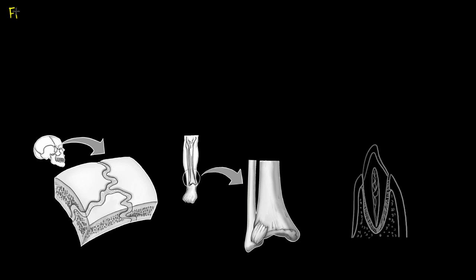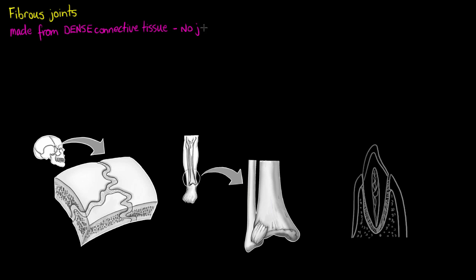Welcome to this tutorial on fibrous joints. Over the last few videos we have discussed joints and taken a deeper look into synovial joints, but what about our fibrous joints? Fibrous joints within the body are classified by a joint that is created by fibrous tissue, namely dense connective tissue. There will also be no cavity like we see with our synovial joints, and the movement allowed by this type of joint is very limited and is determined by the length of the connective tissue fibers.